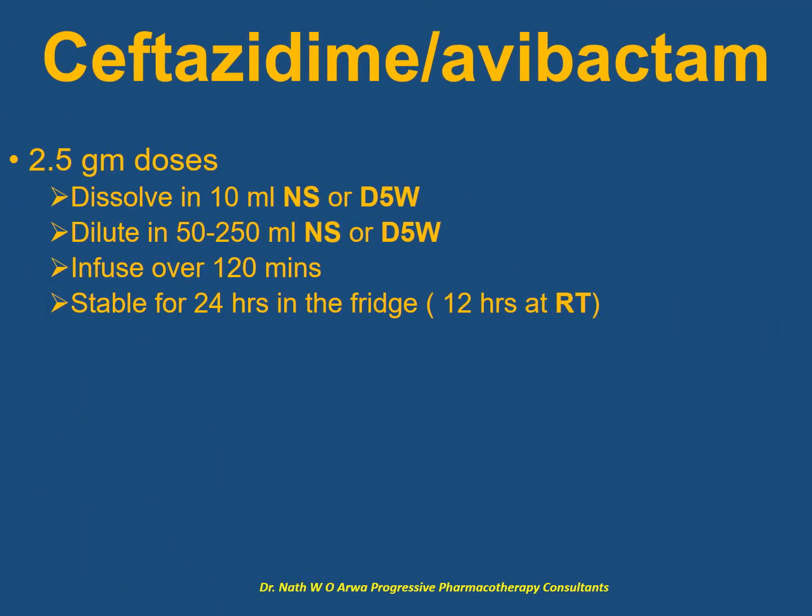For ceftazidime-avibactam, for doses of up to 2.5 grams, dissolve every vial in 10 ml of normal saline or dextrose 5% — note that water for injection is not used here. The resultant solution should be further diluted in 50 to 250 ml of compatible IV fluid and infused over 2 hours. Such IV solutions remain viable in the fridge for 24 hours and at room temperature for only 12 hours.